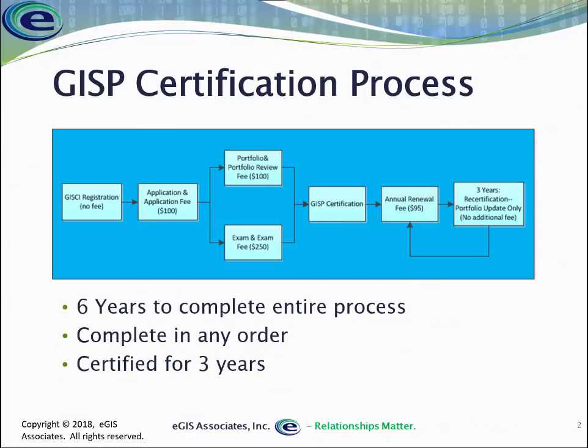As you may remember from the previous video, the GISP certification process has two basic components: you've got to complete a portfolio and you've got to complete an exam. You have an entire six-year window once you start the process to complete the certification. Typically, you pay your application fee and then choose to take the exam first and complete the portfolio second, or if you've been in the profession for a while, you may do the portfolio first and then take the exam second. The order doesn't matter. Once you pay the application fee and start the process, you have that six-year window to complete it, and then you're certified for three years.